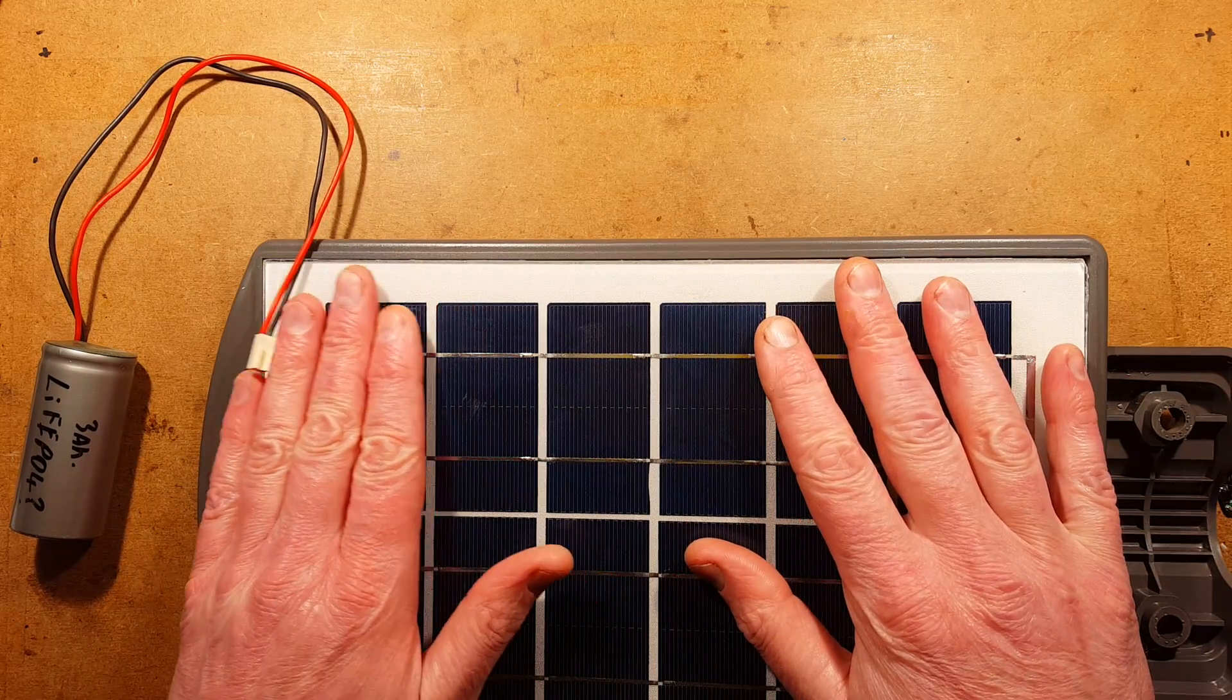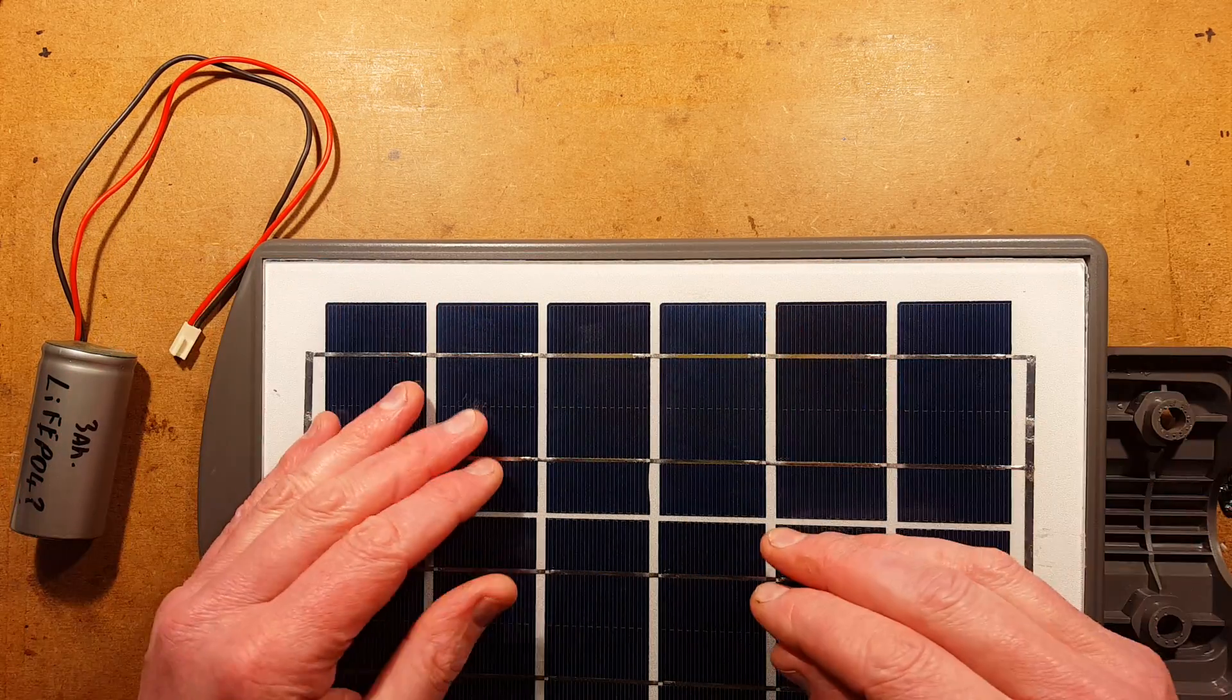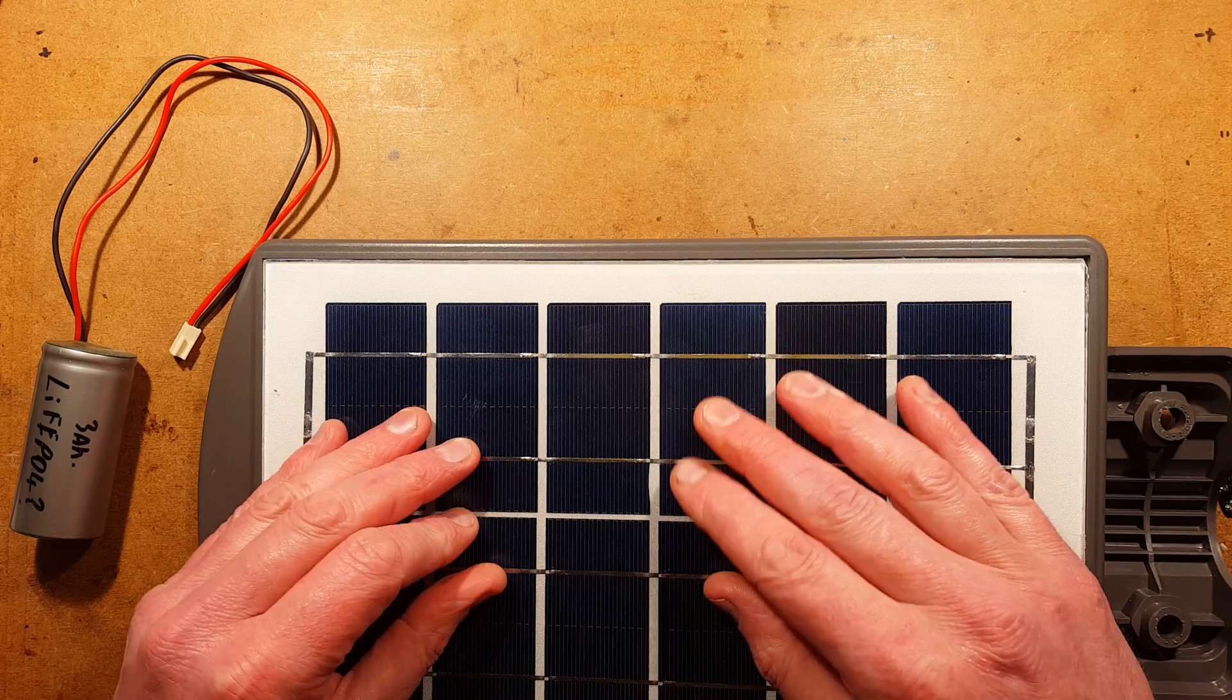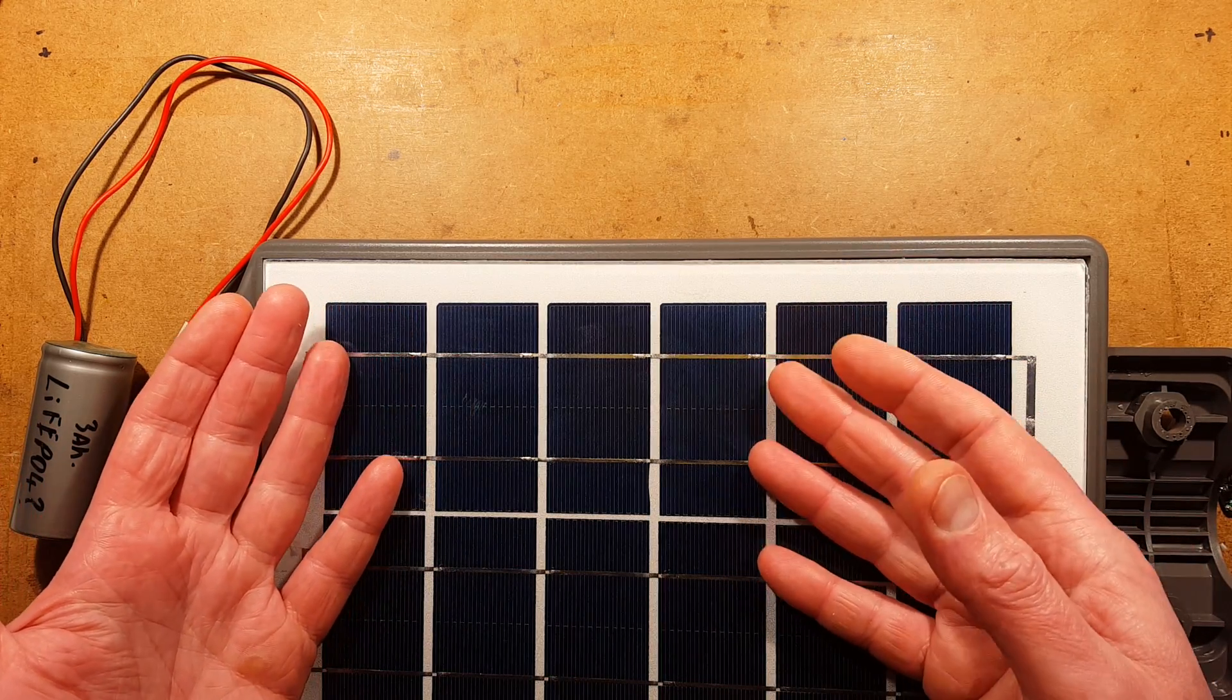I took the solar panel outside—keep in mind this is winter, it was a cloudy day, not great sunshine—and I managed to get about 70 milliamps out of this panel. But I know that in the peak of summer it would easily put out something like 500 milliamps or more.